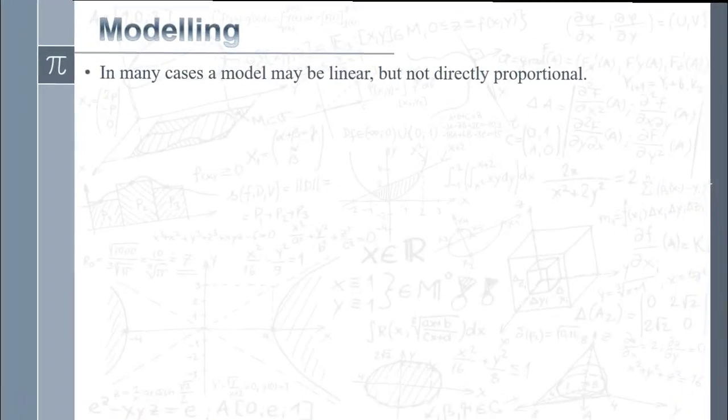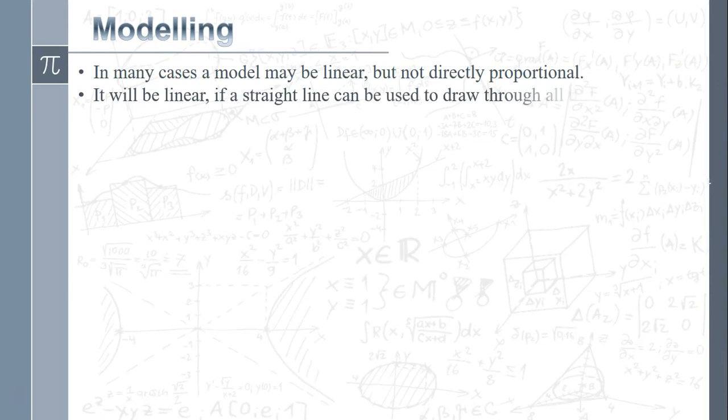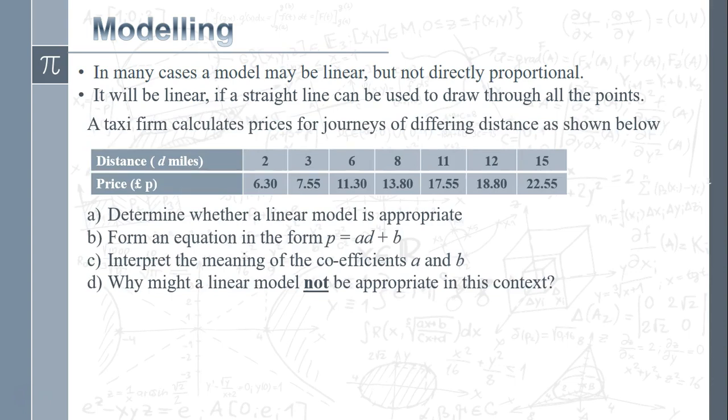Here we've got a model that's linear but not directly proportional. It will be linear if you can get all the points in a straight line. We've got some information about the cost of journeys for a taxi firm. First, is a linear model appropriate? We could start off by looking at the differences between the values, but you'll notice we've got an increase of one unit here but an increase of three here.